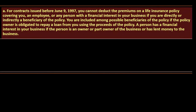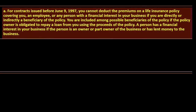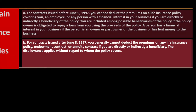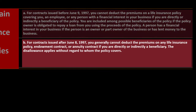Number 3: certain life insurance and annuities. A) For contracts issued before June 9, 1997: you cannot deduct premiums on a life insurance policy covering you, an employee, or any person with a financial interest in your business, if you are directly or indirectly a beneficiary of the policy. B) For contracts issued after June 8, 1997: you generally cannot deduct premiums on any life insurance policy, endowment contract, or annuity contract if you are directly or indirectly a beneficiary. The disallowance applies without regard to whom the policy covers.